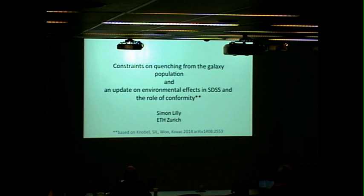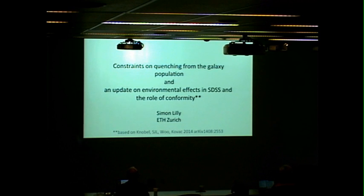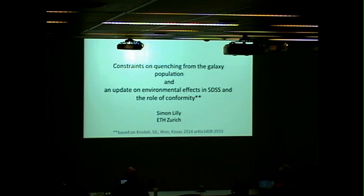What I wanted to do was actually do two things. First, rather quickly, frankly, just remind you of some of the constraints on at least the outcome of quenching that come through looking at the evolving population of galaxies — stressing I'm talking about the population, trying to see simplicities, symmetries in the population. Then the second part of my talk, I want to talk about a new paper on AstroPH just a day or two ago, where we've looked again at Sloan and developed our understanding of environmental effects, central-satellite distinction, and in particular the role of this effect called conformity, which is a slightly confusing concept.